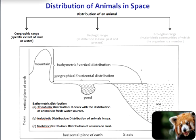Geographic range or distribution of animals in space can be of two types: bathymetric or vertical distribution, parallel to the y-axis of the earth, and geographical or horizontal distribution, parallel to the x-axis. Bathymetric or vertical distribution can be of three types: limnobiotic distribution — distribution in fresh water; holobiotic distribution — distribution in sea; and geobiotic distribution — distribution of animals on land.